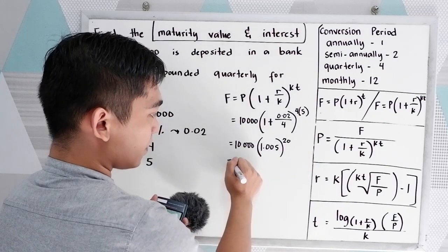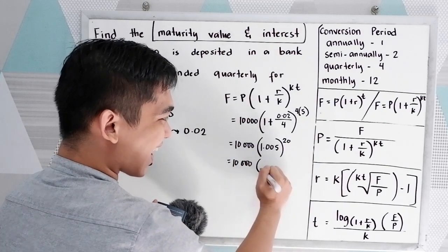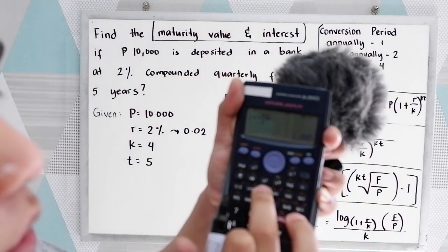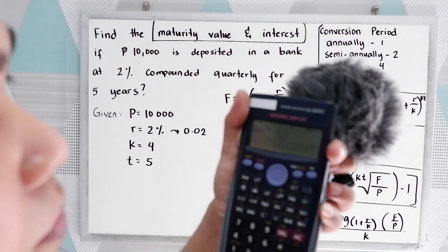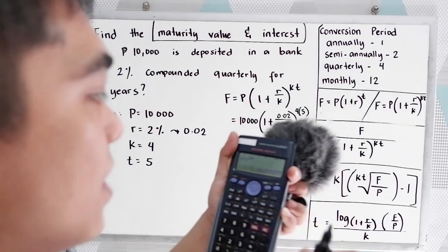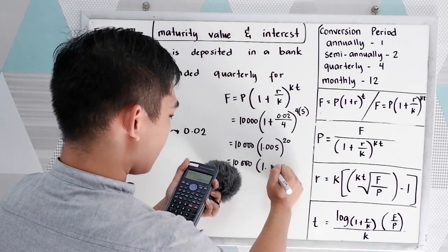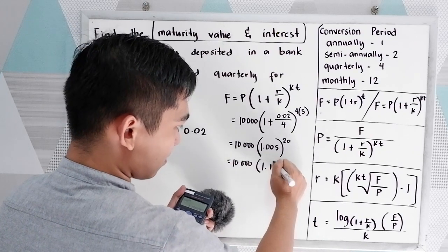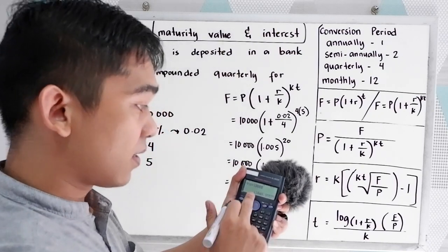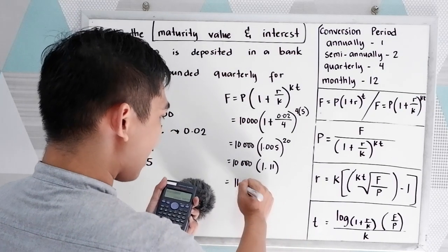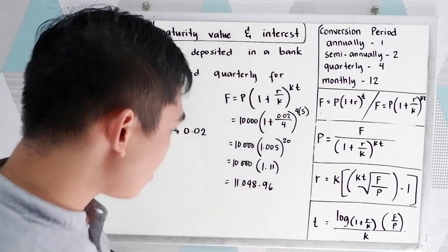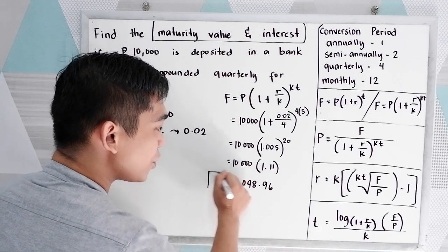That will give us 201 over 200, in decimal, 1.005, raised to 4 times 5, which is 20. Now we have 10,000 times 1.005 raised to 20. That is 1.11, so multiply to 10,000, that will give us 11,048.96. Let us use 2 decimal places, this will be our future value.